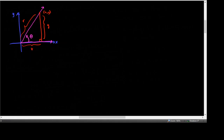Relative to that angle, the three sides of the triangle have particular names. The side opposite the angle, labeled Y, is called the opposite side. The side across from the right angle is the hypotenuse. The other side of the triangle that helps form angle theta — the leg labeled X — is called the adjacent side.